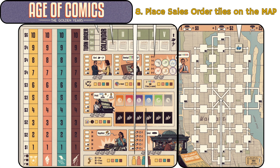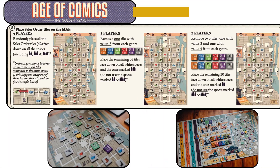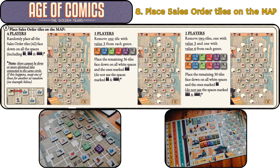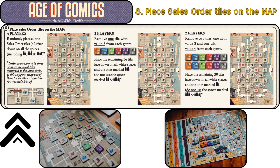Step 8: Place sales order tiles on the map. Step 9 — 4 players: Randomly place all the sales order tiles, 42 of them, face down on all the spaces, including the 2, 3, and 4 meeple icons. Note: there cannot be three or more identical tiles connected to the same circle. If this happens, swap one of those for another at random.